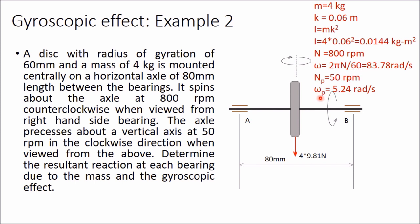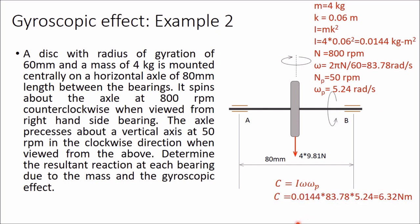The gyroscopic couple C = I·ω·ωp — moment of inertia multiplied by angular velocity of spin and angular velocity of precession. After multiplying all these values, the gyroscopic couple comes out to 6.32 N·m. This is the couple needed to be applied for creating the desired motion.